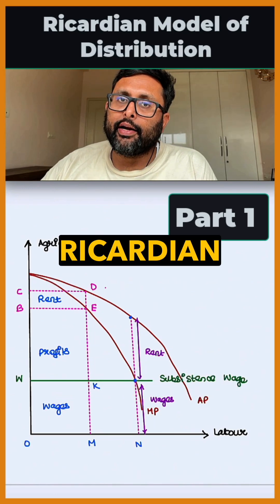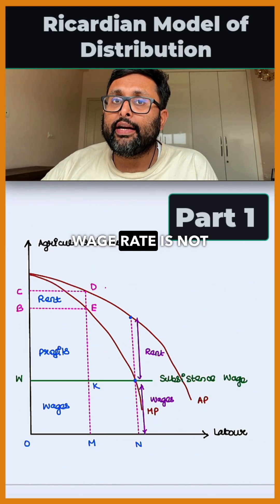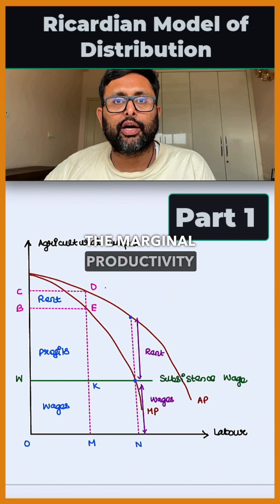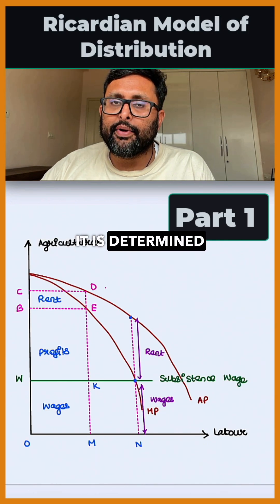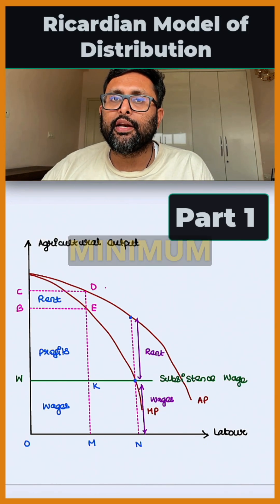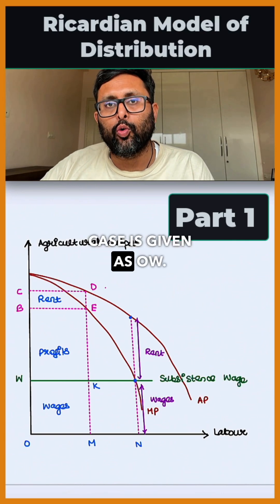Note that in the Ricardian model, wage rate is not determined by the marginal productivity of labor. It is determined by the subsistence minimum wage, which in this case is given as OW.